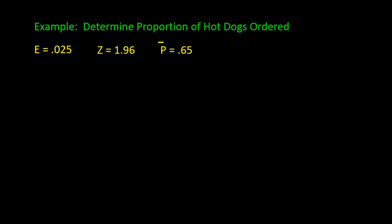Let's use sample results that we have obtained previously and therefore use a p bar of 0.65. So using the formula for determining the sample size for a proportion, we get n is equal to 1.96 squared, that's z squared, times p bar 0.65 times 1 minus p bar or 0.35 divided by 0.025 squared.